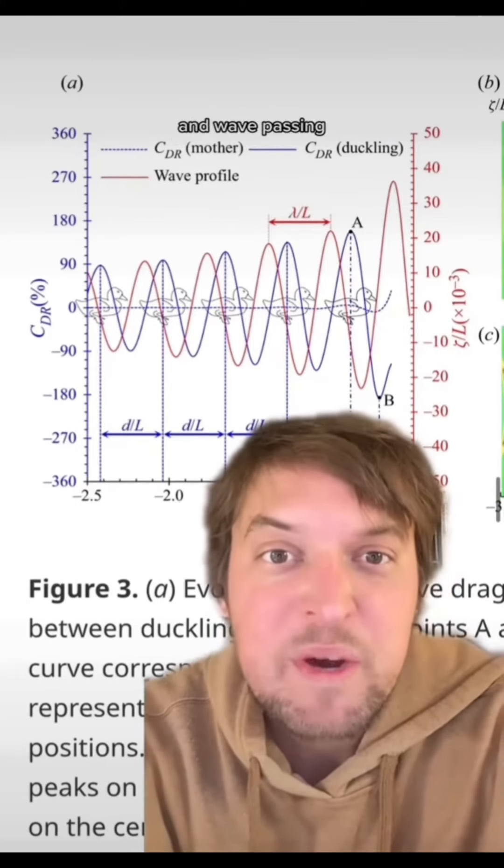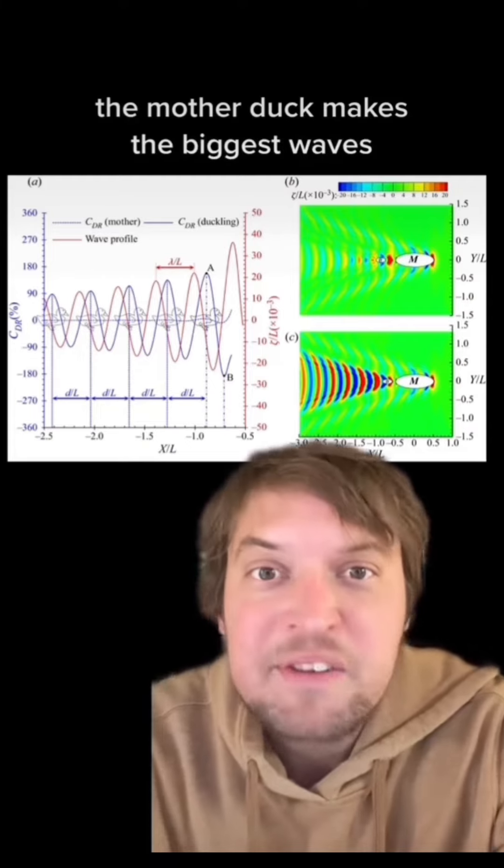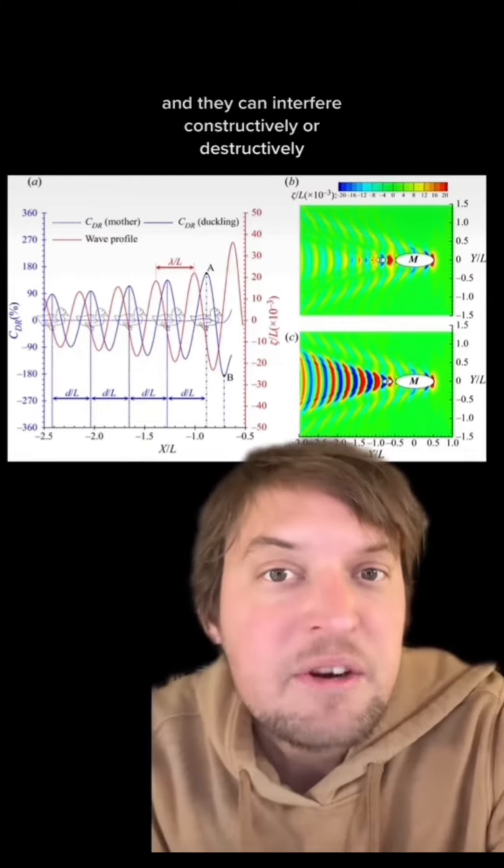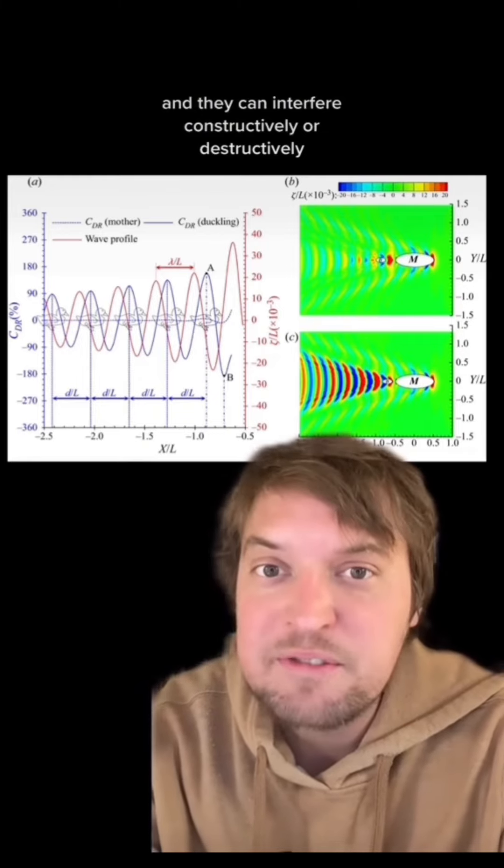Two things allow that to happen: wave riding what we talked about earlier and wave passing. The mother duck makes the biggest waves, but the rest of the little duckies make their own little waves too. And they can interfere constructively or destructively with the rest of the waves.